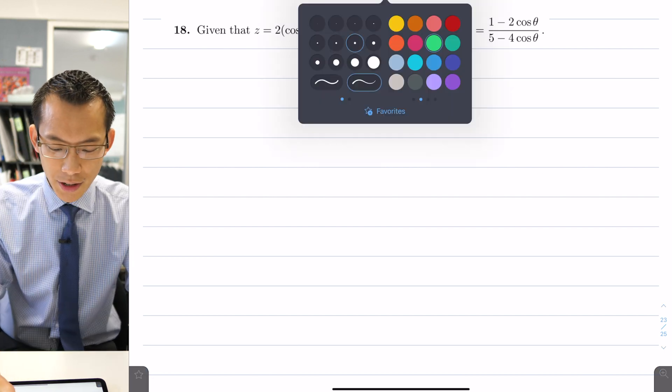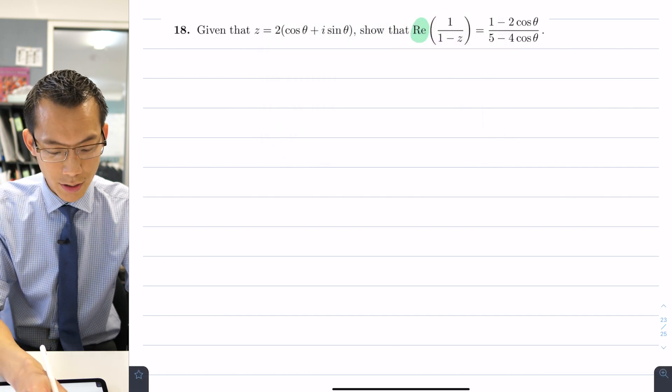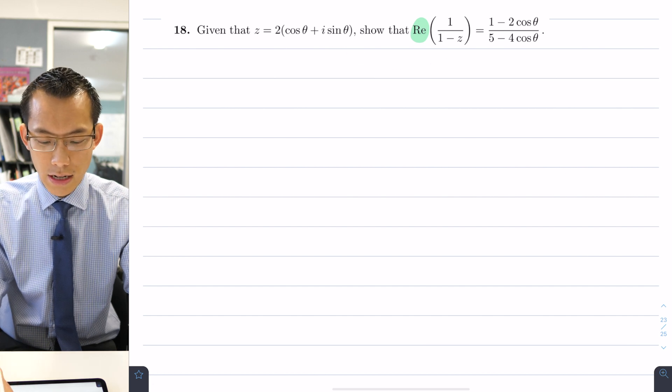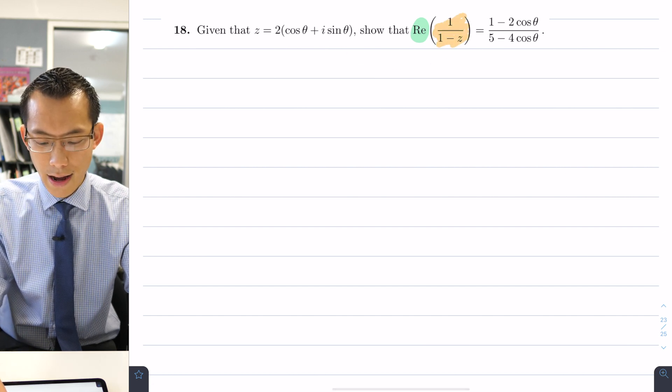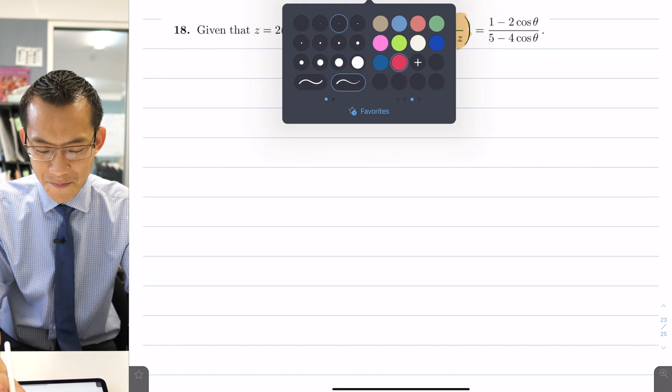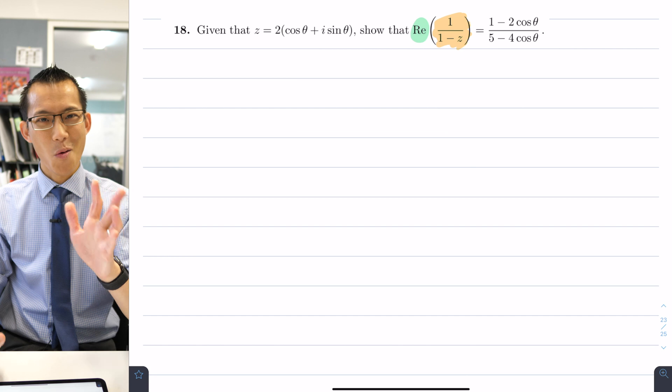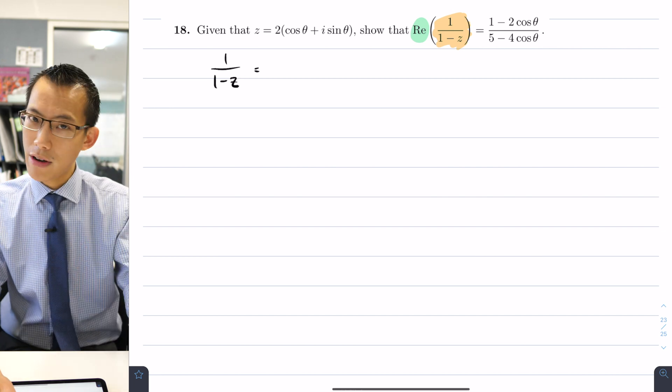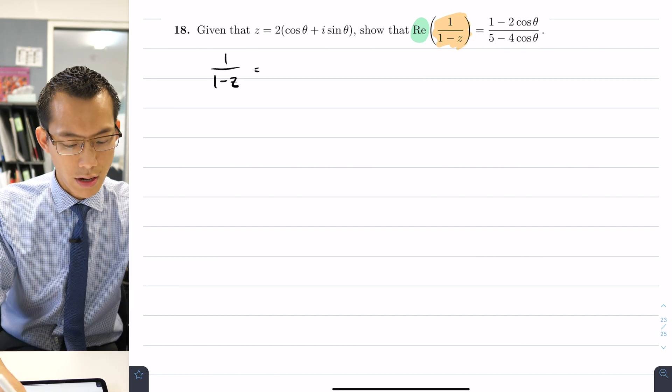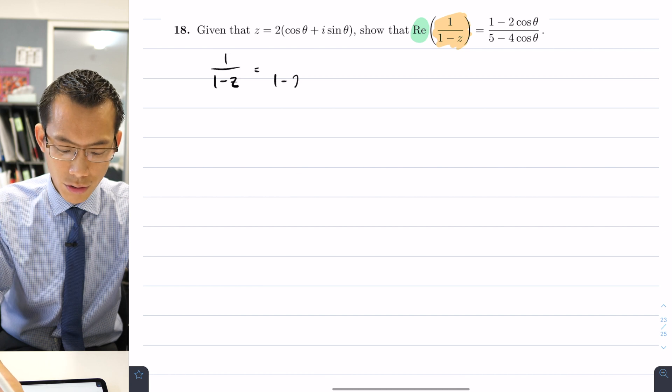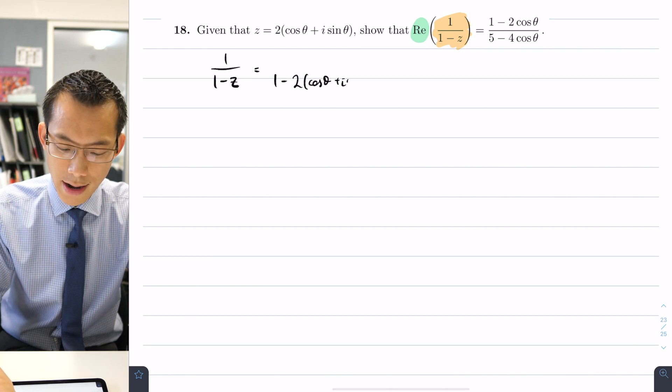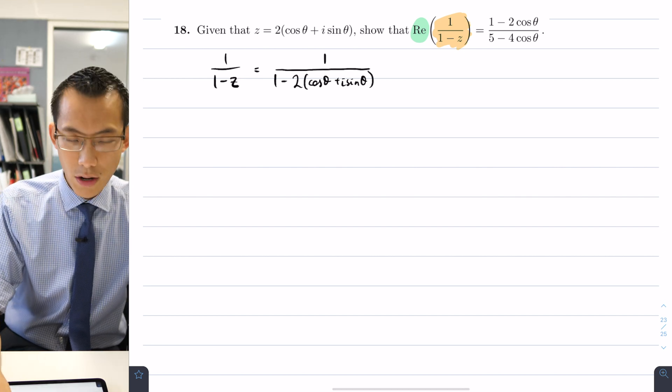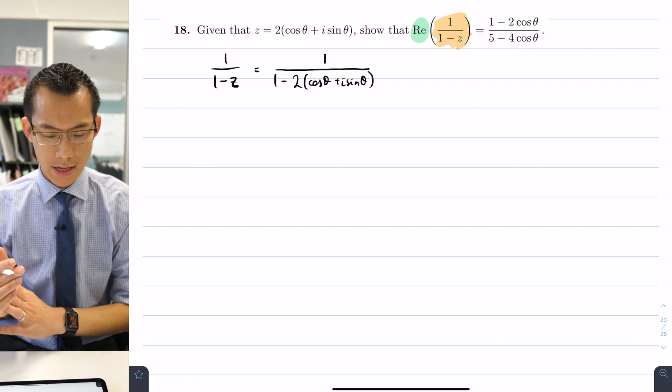For starters, I'm going to take the complex number that they handed to us, z equals 2(cos θ + i sin θ), and then substitute it into this guy over here and see what I come up with. Let's write this out: 1/(1-z). I'll do a straight substitution to begin with, so on the denominator I'm going to get 1 - 2(cos θ + i sin θ), and on the numerator I've still got 1 just hanging out there.